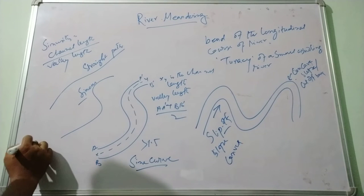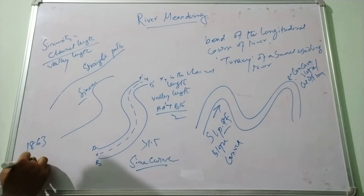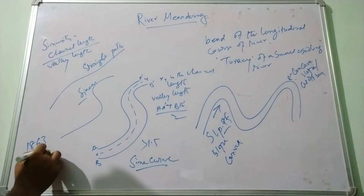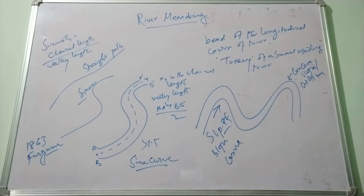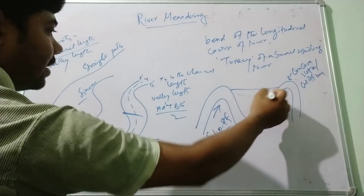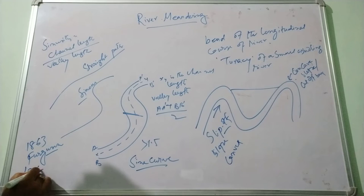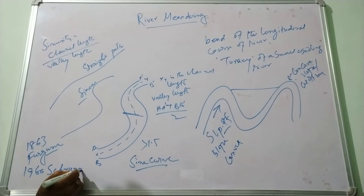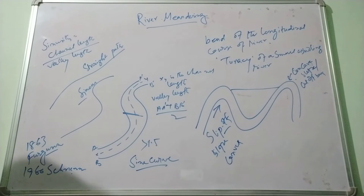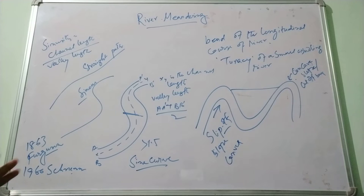In 1863, Ferguson stated that there is a close relationship between the meandering wavelength and the width of the meandering. In 1916, Scroon stated high sinuosity of the channel is associated with the high proportion of the silt and clay.